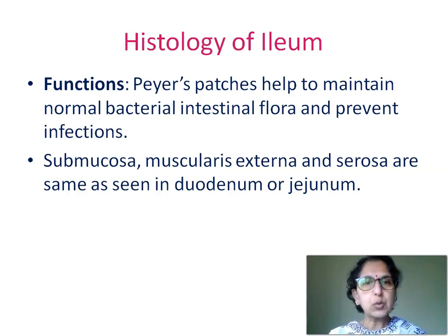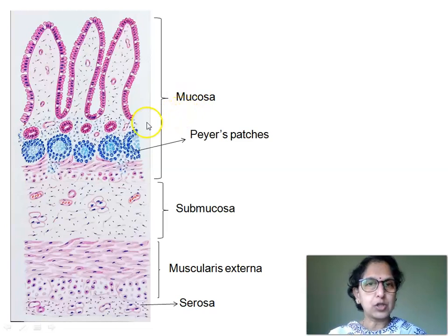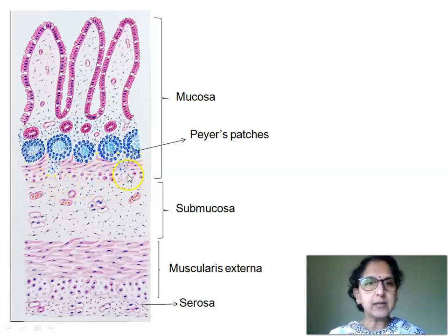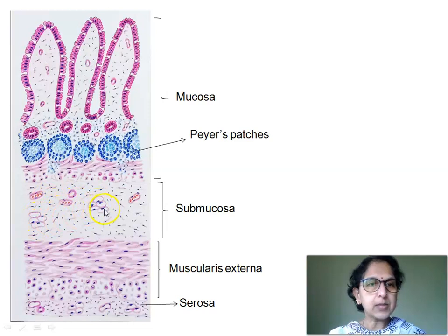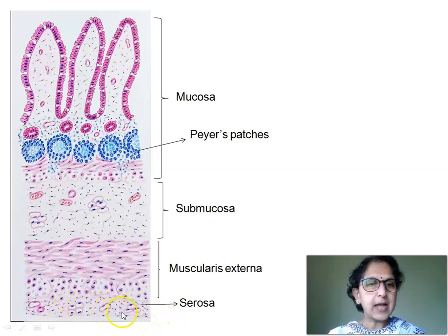The features of submucosa, muscularis externa, and serosa of ileum are the same as seen in duodenum or jejunum. In the diagram of histology of ileum, the muscularis mucosae shows inner circular and outer longitudinal layers of smooth muscle fibers. The submucosa is made up of connective tissue, blood vessels, adipocytes, Meissner's plexus, and a few lymphatics. Muscularis externa has inner circular and outer longitudinally arranged smooth muscle fibers, and the outermost layer is the serosa, made up of connective tissue, blood vessels, adipocytes, and nerve fibers.